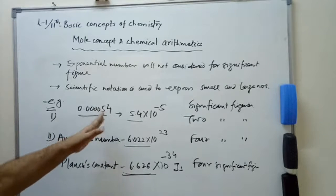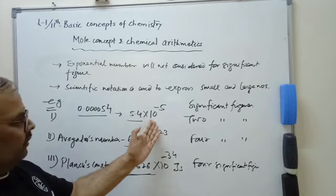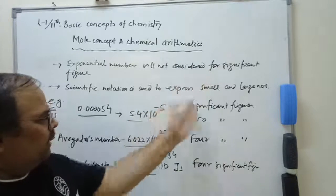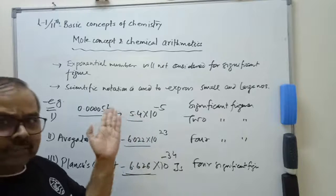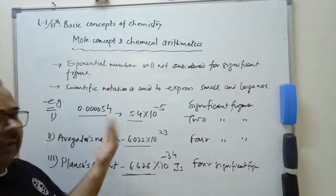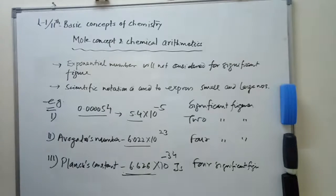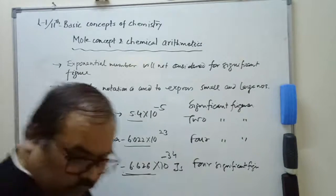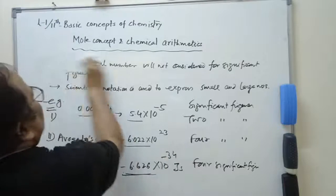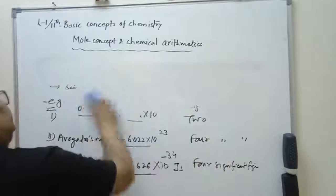Very simply: these leading zeros will not be considered for significant figures. Convert numbers into scientific notation form — 5.4 into 10 to the power minus 5. Both the smallest and largest numbers can be represented by scientific notation. The part before the exponent term determines the significant figures; the exponential term is not counted.